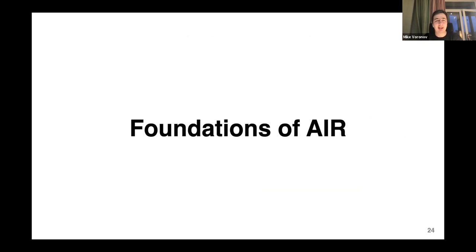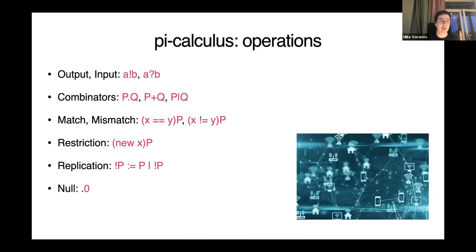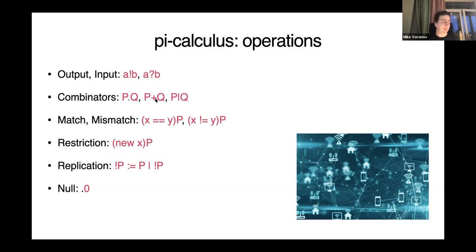Let's move on to the Aquamarine Intermediate Representation, AIR. It's based on Pi-calculus — I won't cover all details, but I added the slide to show some intuition behind several instructions. The most important thing here is the combinators. The first one is the sequential combinator: execute P, and if it succeeded, only then execute Q. The third one is called parallel: execute P and Q in parallel. The plus means a join behavior, which I won't cover in detail.